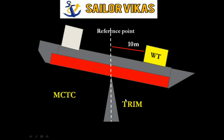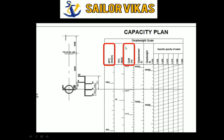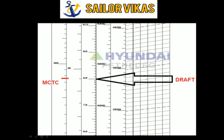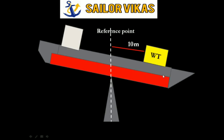MCTC is the moment to change the trim by one centimeter, and we can find it from the hydrostatic table or the ship's plans. Looking at the capacity plan, there is a deadweight scale and a table of MTC values corresponding to different drafts. For a draft of 8 meters, the corresponding MCTC is approximately 775 ton-meter per centimeter.